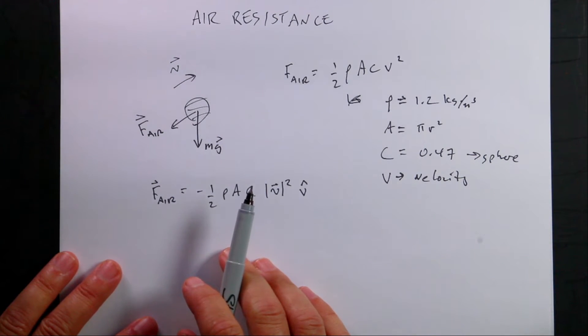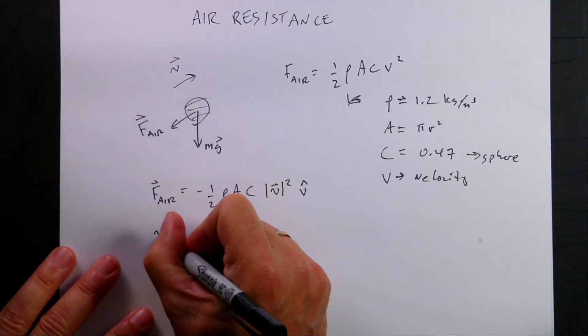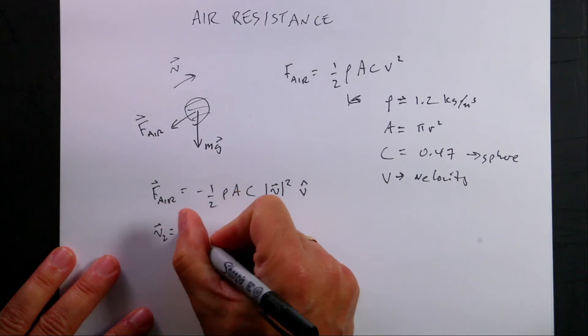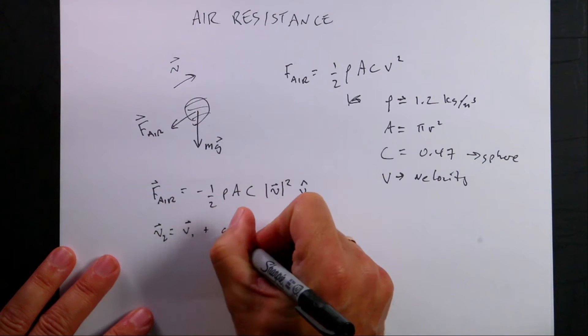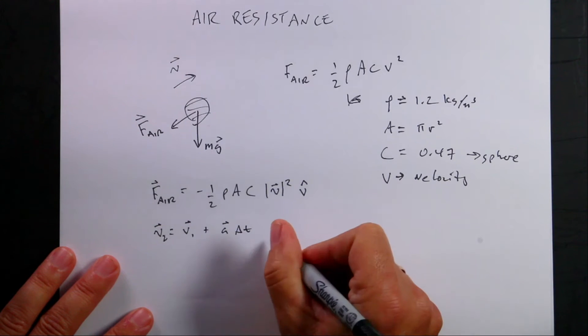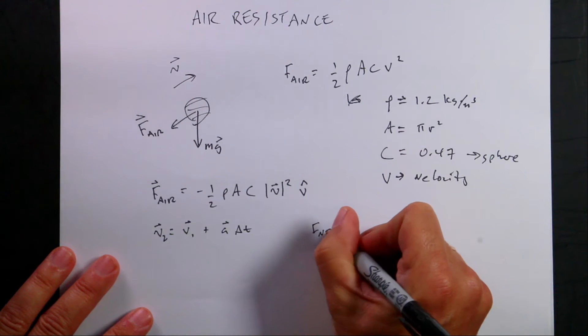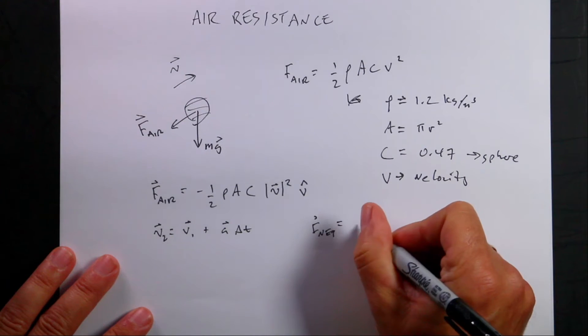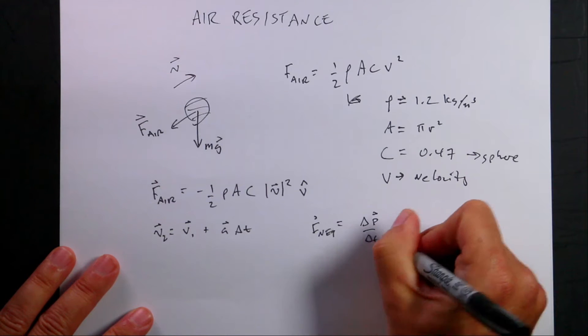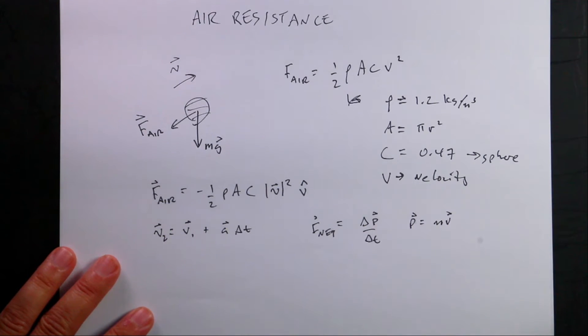I kind of want to make a different change too. In the past, I've been using v2 equals v1 plus a delta t for my velocity update, right? I'm going to change this to the momentum principle. So the momentum principle says f_net equals delta p over delta t, or p is mv. I like using momentum better.